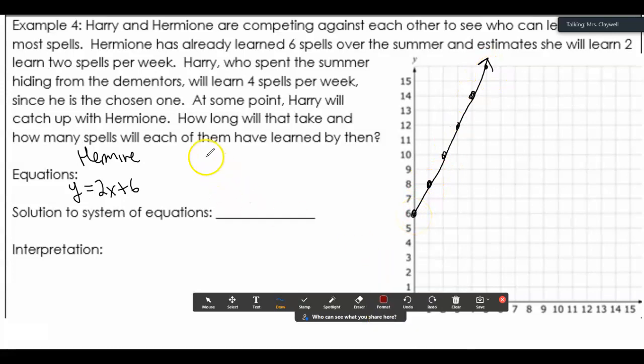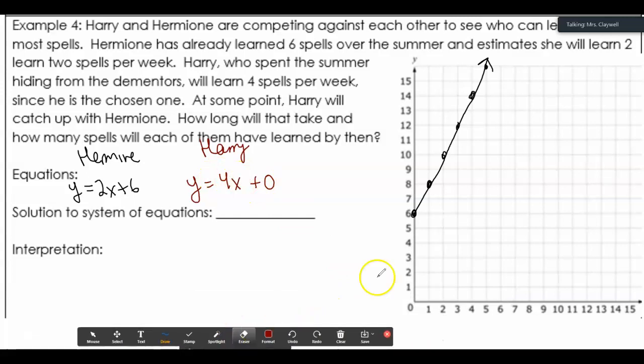And then I'll do Harry in a different color. Harry started at 0 but is learning 4 per week. So we started at 0, then I'm learning 4 per week.